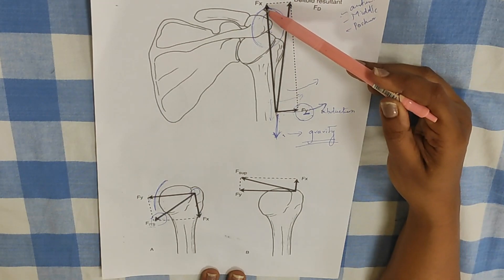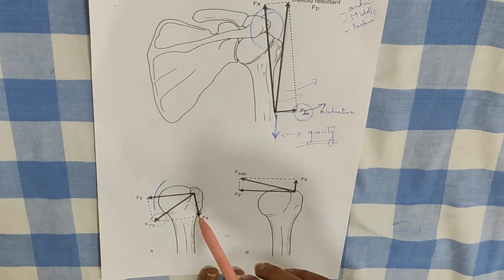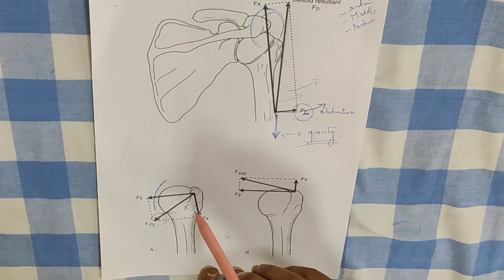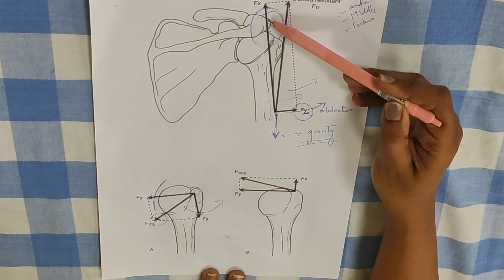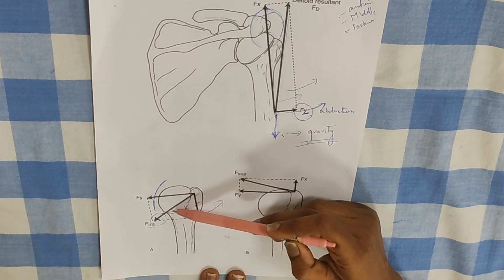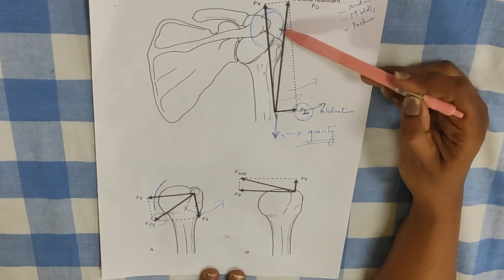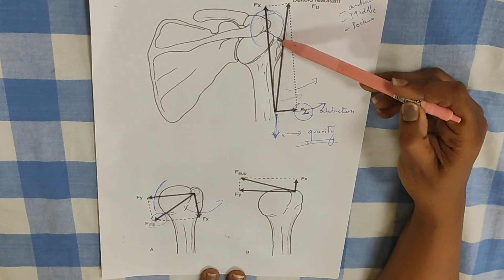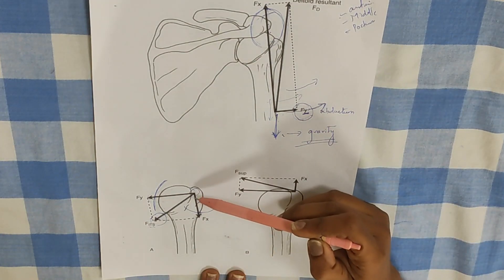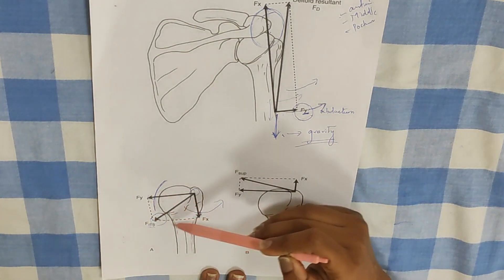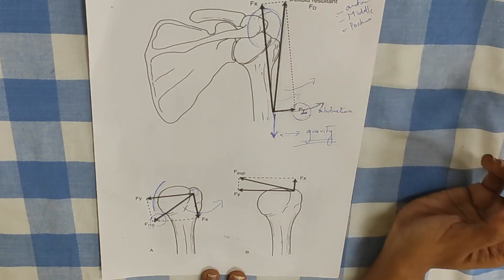The superior directed force of the deltoid is cancelled by the inferior directed force of the rotator cuff muscles. Now when the deltoid contracts, pure abduction can happen because it is a well-balanced system — deltoid contracts while the rotator cuff provides inferior translation, allowing pure abduction without impingement at the subacromial structures. That is one key advantage of having the cuff contract along with the deltoid, maintaining dynamic stability at the glenohumeral joint.